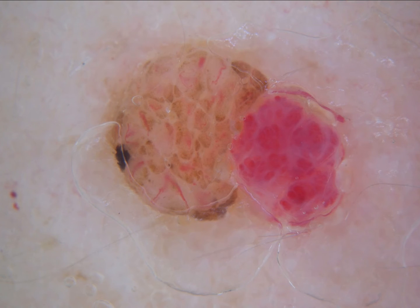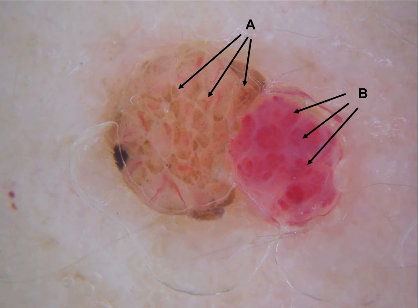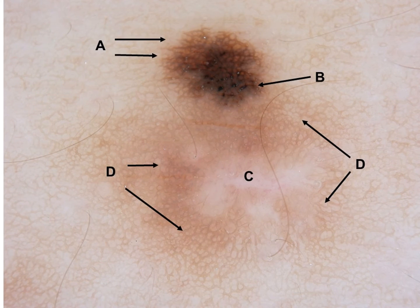In the next example you see very nicely on the left-hand side the dermal nevus — slightly exophytic — as well as the angioma on the right-hand side, also slightly exophytic, and they are closely coming together. Here also, in the upper part A and B we see the melanocytic nevus, and in C the hypopigmented center of the dermatofibroma, which is represented with the hyperpigmented post-inflammatory pigmented area at the periphery in part D.